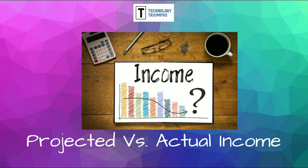It's good business practice to compare our actual income against our projected, for example by periodically comparing the figures. It may be that our actual income is more than we even predicted — this would be a good indication that the business is doing really well. If our actual income drops below what we predicted, this might be an indicator that things aren't quite going as planned and measures might need to be put in place to improve the business.